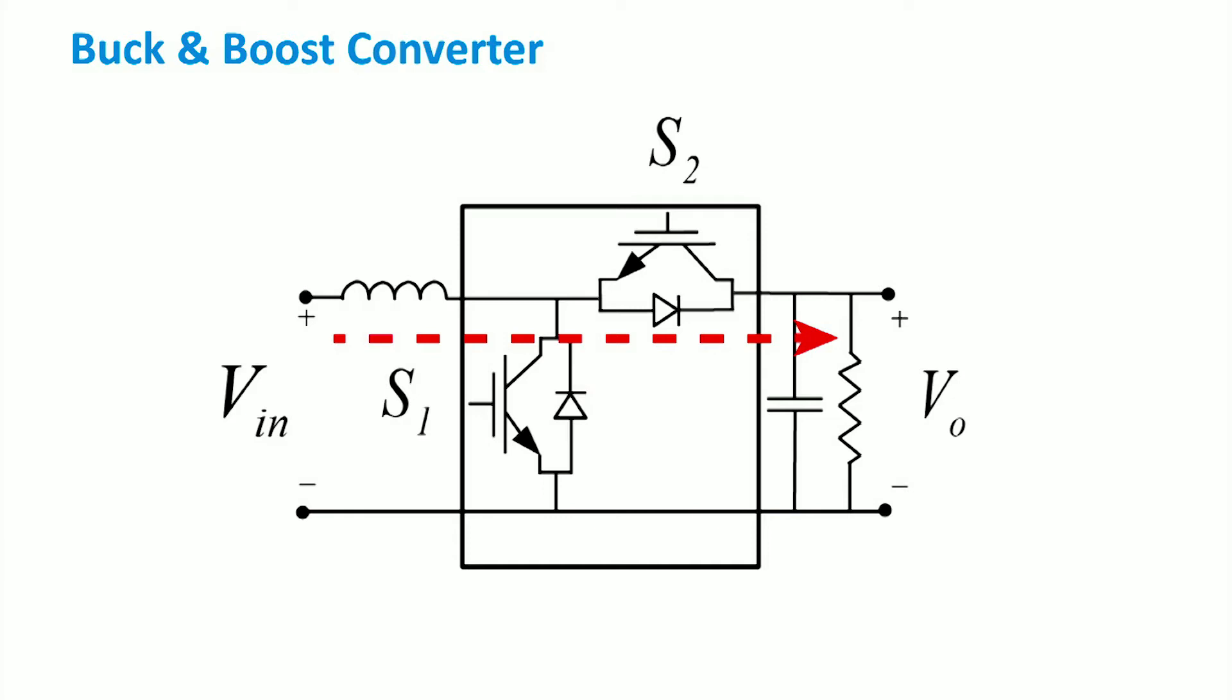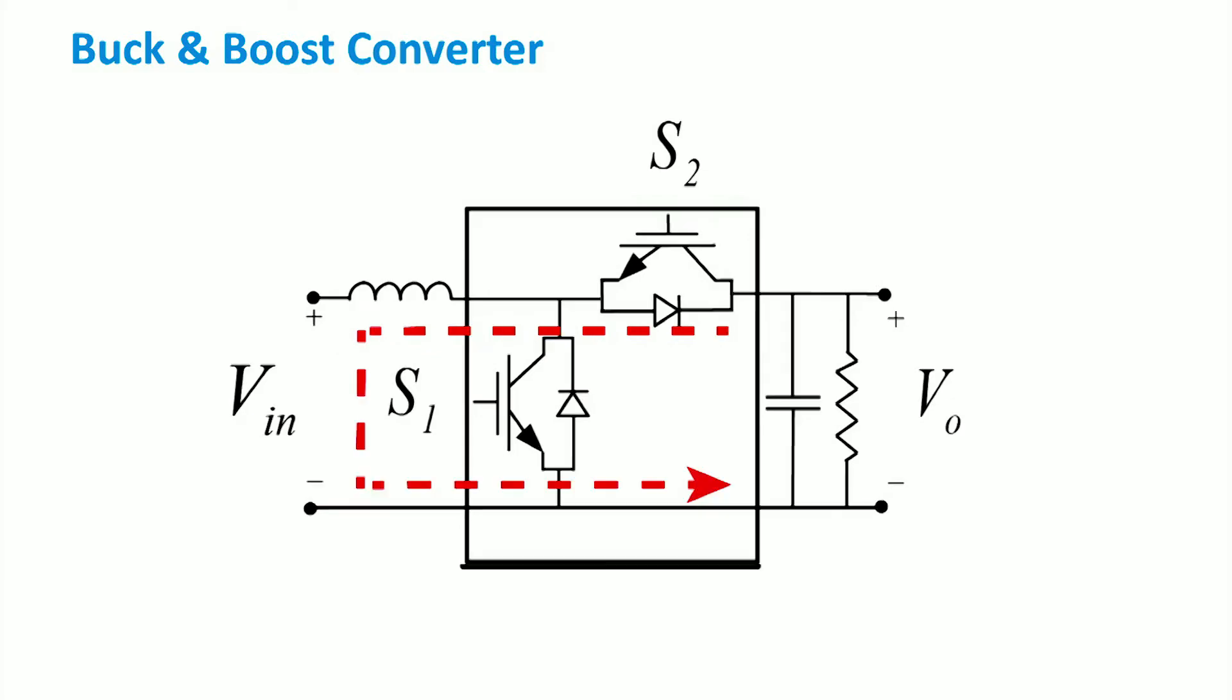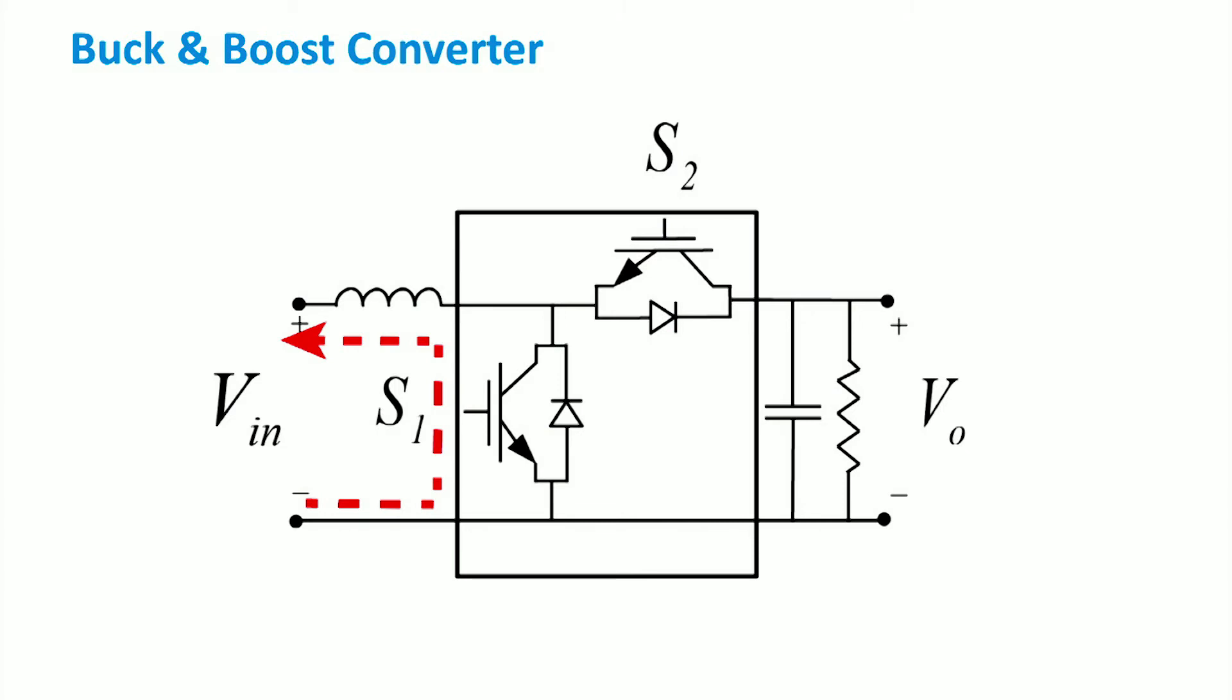The buck operation is when the switch S2 is conducting. When S2 is off, the freewheeling diode of S1 takes the current over. By varying the duty cycle D from 0 to 1, we can vary the current direction.